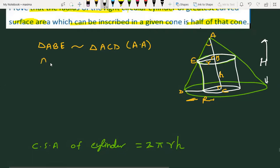When the two triangles are similar, the ratio of the sides: AB upon AC is equal to BE upon CD. So, AB can be written here as capital H minus small h. AC is capital H. BE is small r, and CD is capital R.